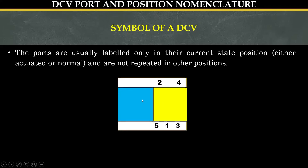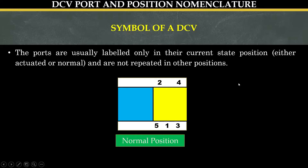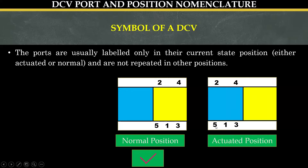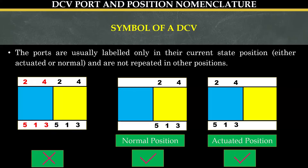Here we can see that this valve has two positions — one represented by blue color and another by yellow color — and this valve has five ports. This valve is in its normal position. In order to understand whether the valve is in its normal or actuated position, these numbers are the guide. The normal position is generally shown on the right hand side and the actuated position is normally shown on the left hand side of the observer.